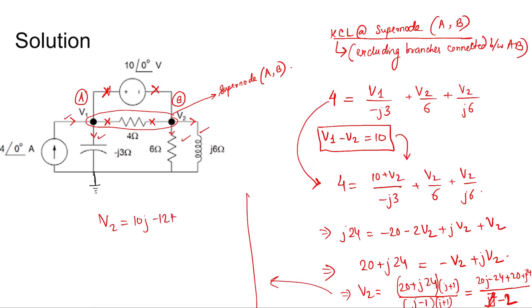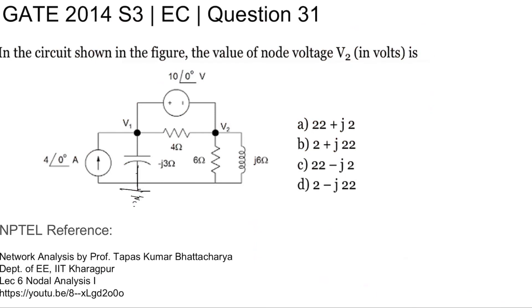The final calculation yields v2 equals 22 plus j2 volts. Thank you.